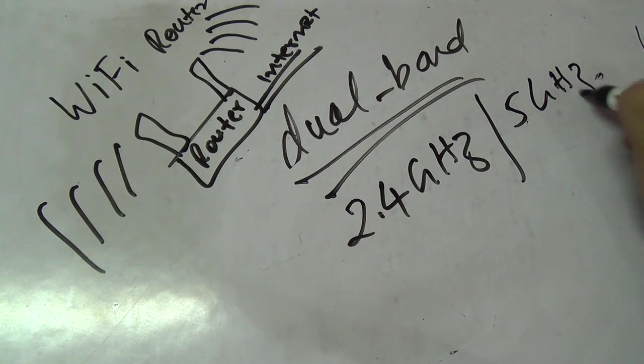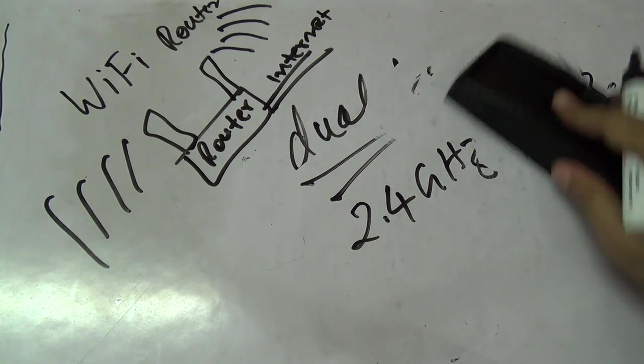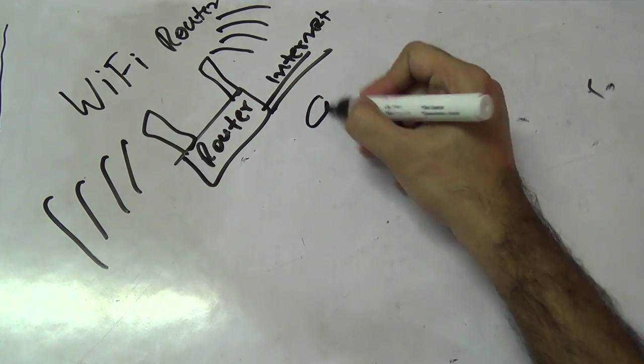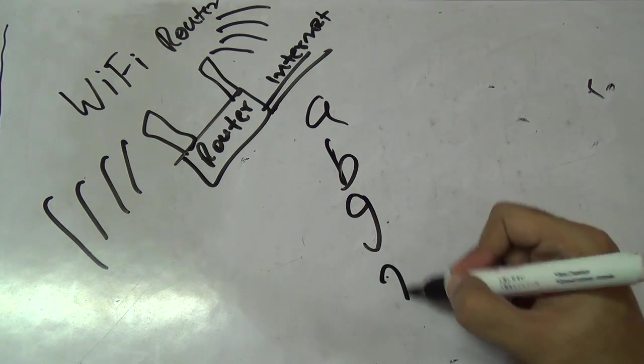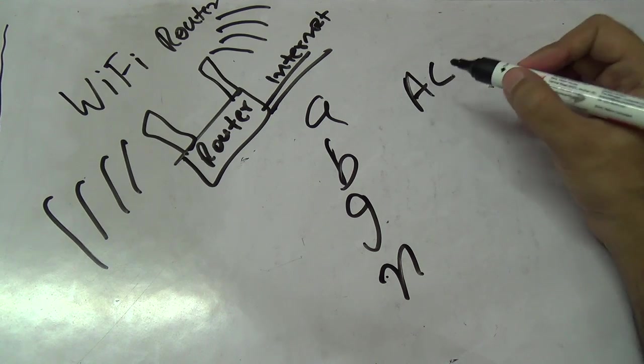If a router is set to have dual band, that means it supports both 2.4 gigahertz as well as 5 gigahertz band. So that's a dual band router. Actually, I was talking about the n standard. As we have seen, we have the a, b, g, n, and now the latest one is ac.